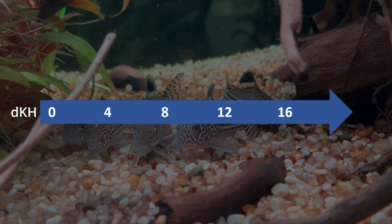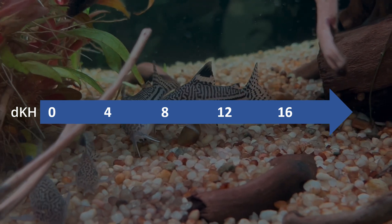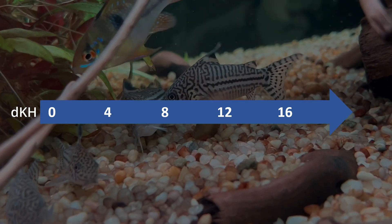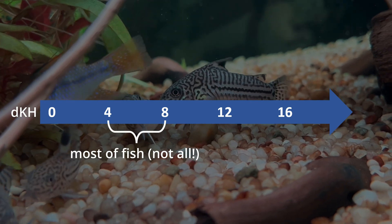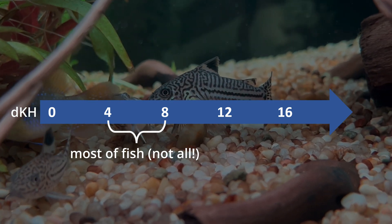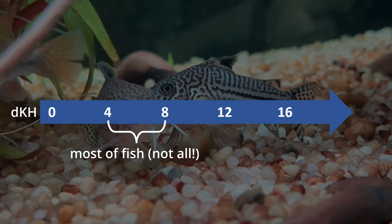So we measure KH in degrees. And typically for our tanks it should be between 4 and 8. And again, this is also highly dependent on the species of your fish.